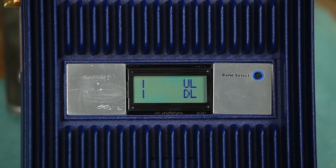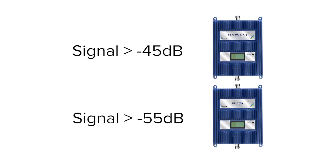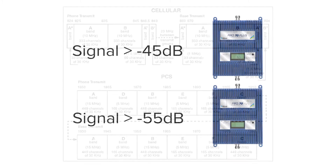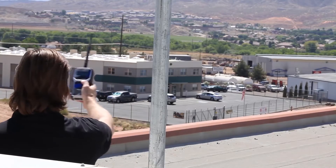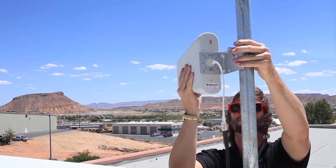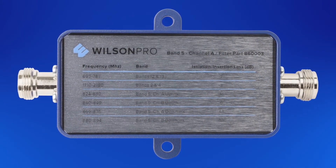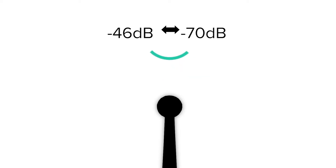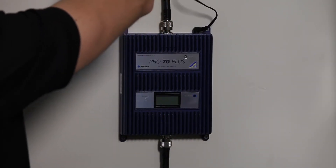Here are some good guidelines for signal strength levels coming into the booster. Anything stronger than negative 45 dB for a Pro 70 Plus, or negative 55 dB for a Pro 70, is too strong — this will cause the spectrum to shut down on the amplifier. Keep in mind there are multiple bands within each frequency spectrum; even if just one band is overloading, the whole spectrum will shut down. To solve this, find a location with less signal, use a directional antenna aimed away from the tower, experiment with shielding, or use filters. Negative 46 to negative 70 dB is the sweet spot — the booster will provide strong signal and the amplifier will be working at maximum performance.